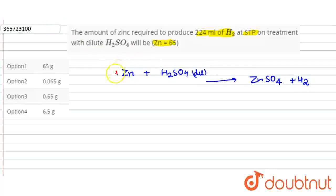In this question, we have to first balance the reaction. So what do we see with stoichiometric coefficients? One, one, one, one. So what does it mean? One mole of zinc reacts to give one mole of hydrogen.